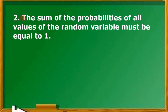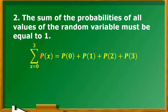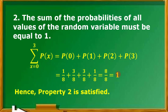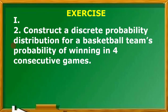For property number 2, the sum of the probabilities of all values of the random variable X must be equal to 1. This is denoted as the summation of P of X where X is from 0 to 3. This equals P of 0 plus P of 1 plus P of 2 plus P of 3. Plugging in the values: 1/8 plus 3/8 plus 3/8 plus 1/8 equals 8/8, or simply equal to 1. Hence, property number 2 of the probability distribution function is satisfied.